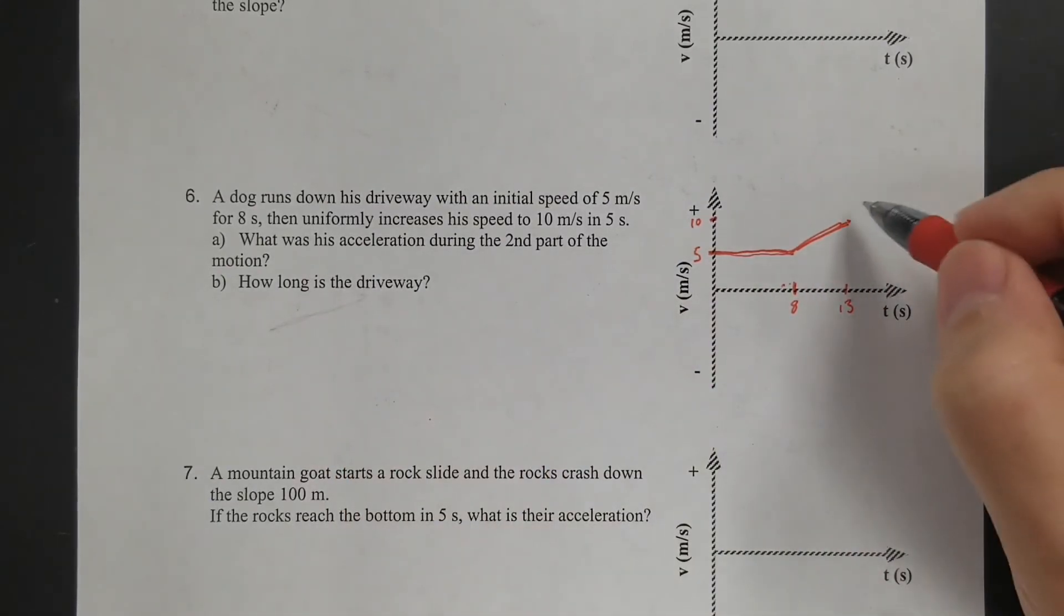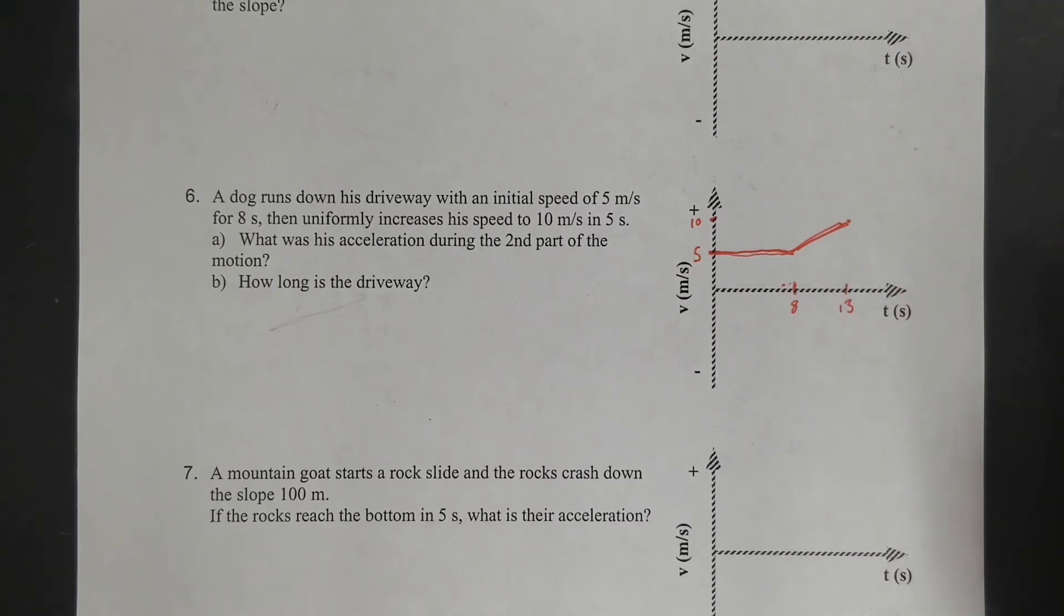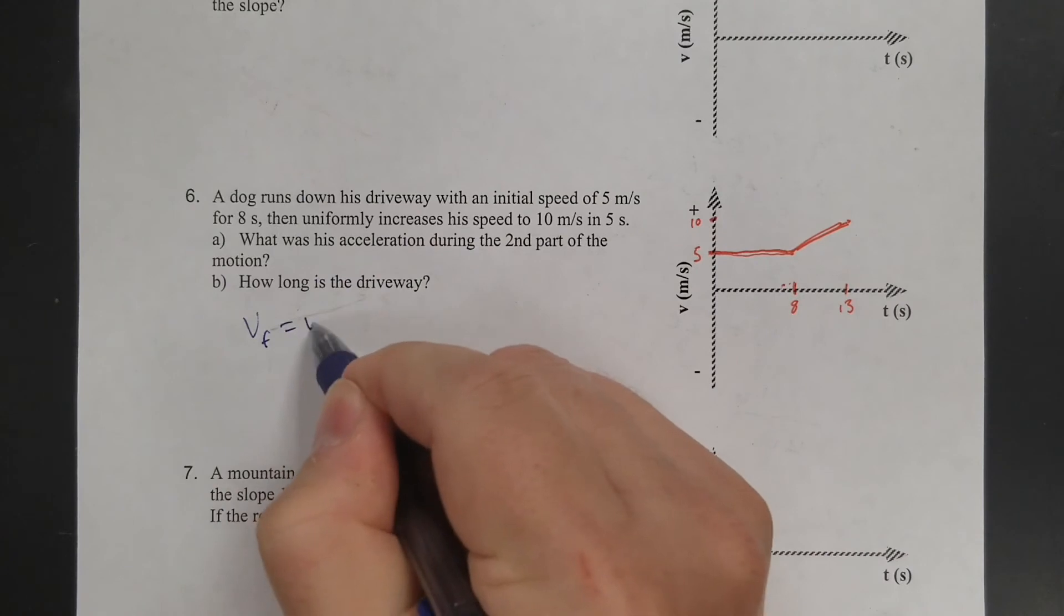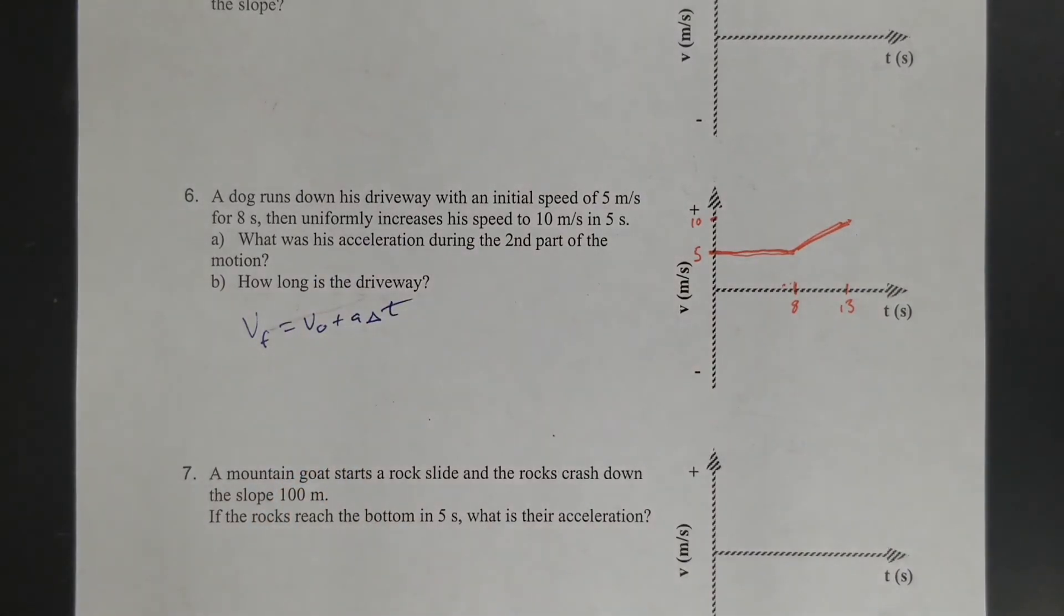All right, so to get the acceleration during the second part, all you got to do is find the slope of that. Or you could say VF equals V naught plus A delta T. Really useful equation.